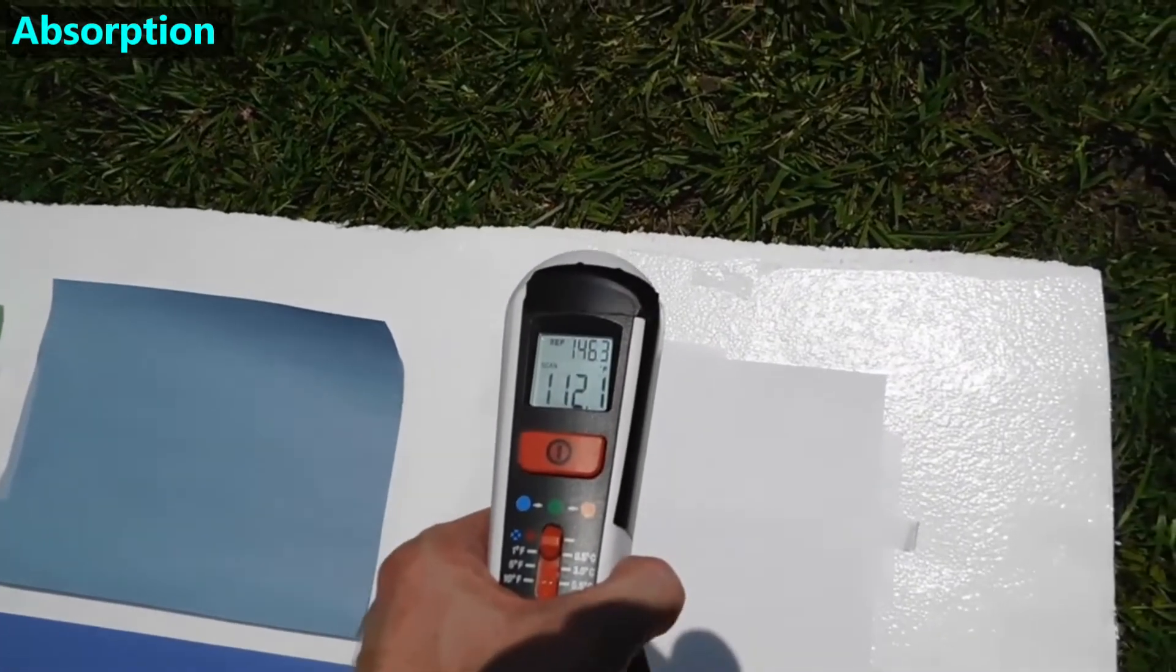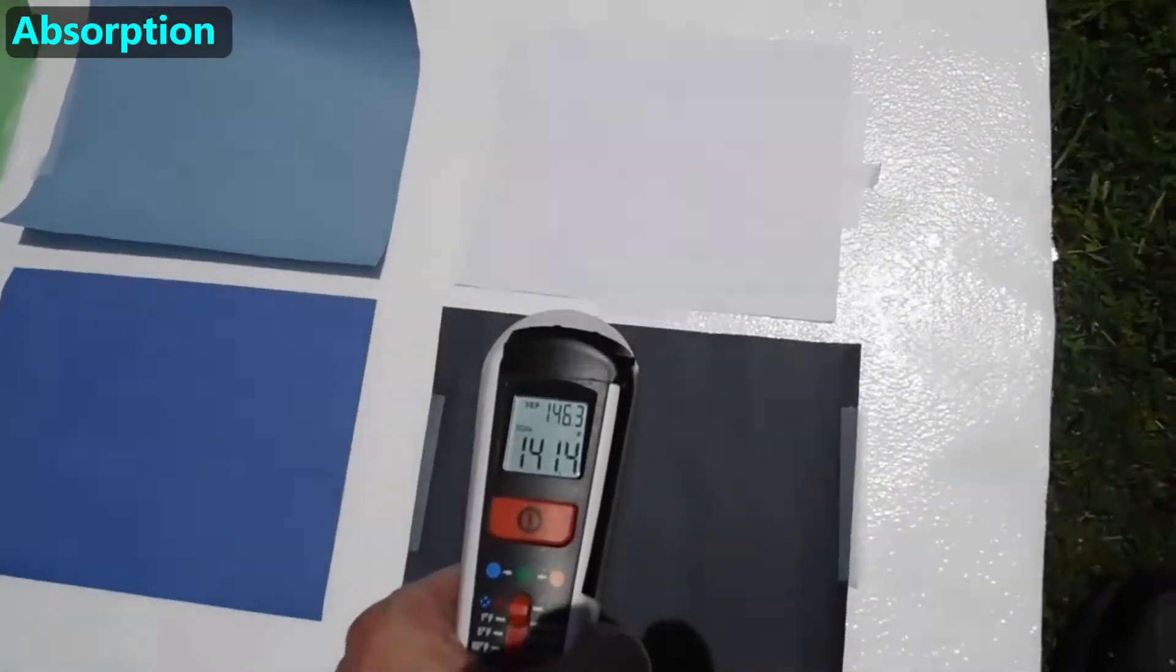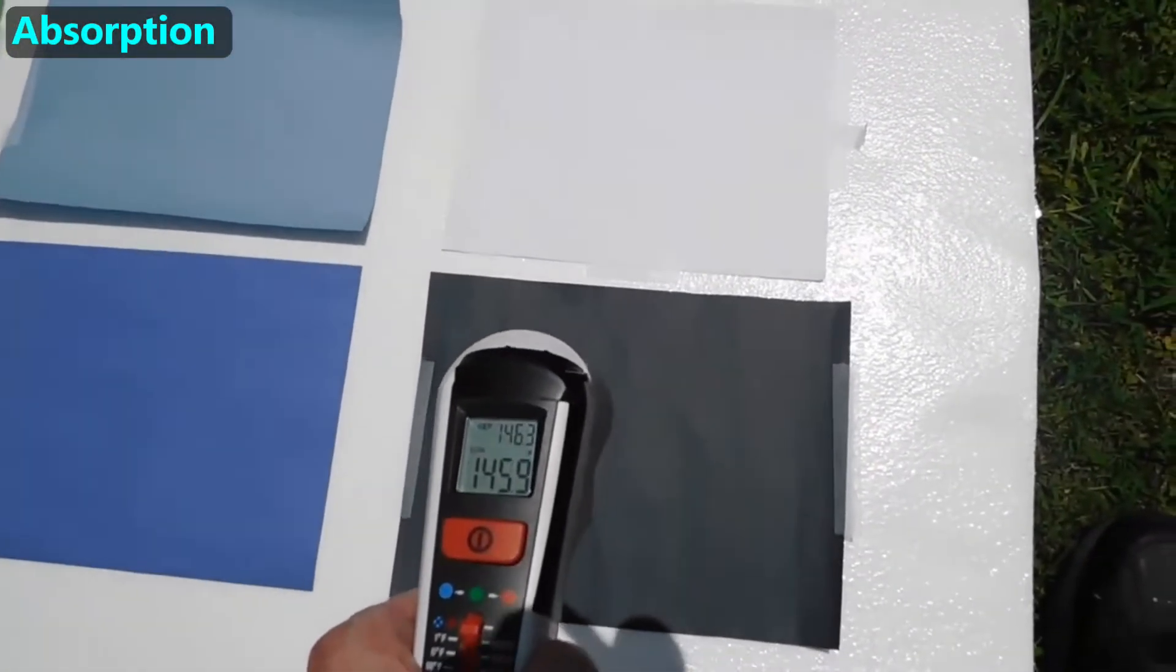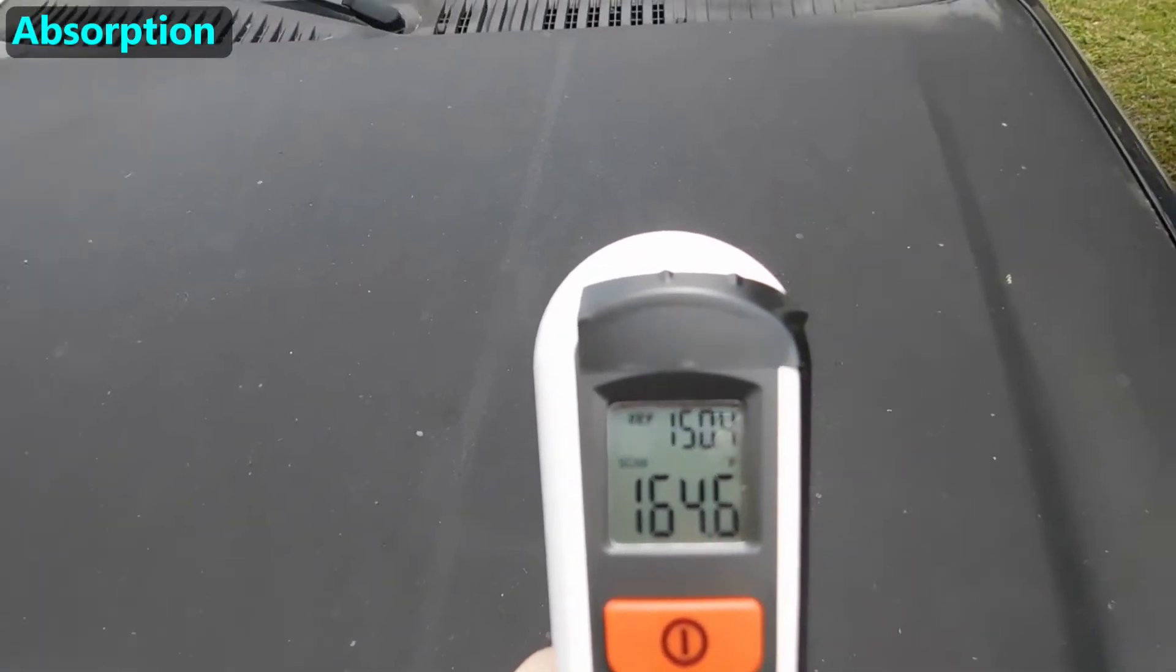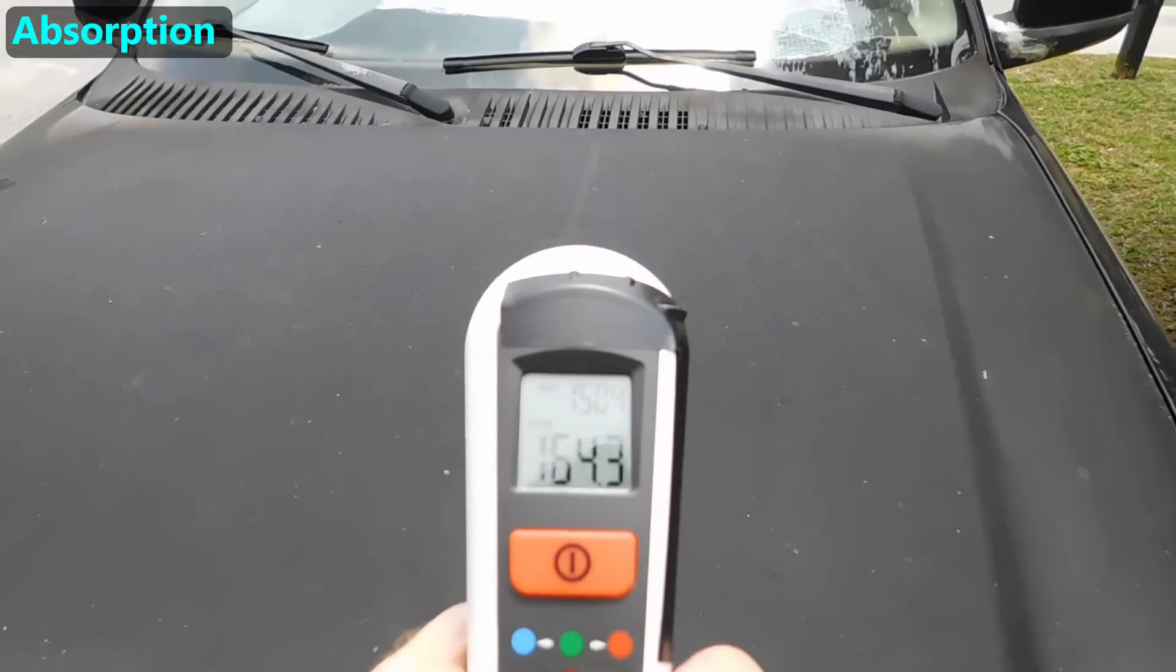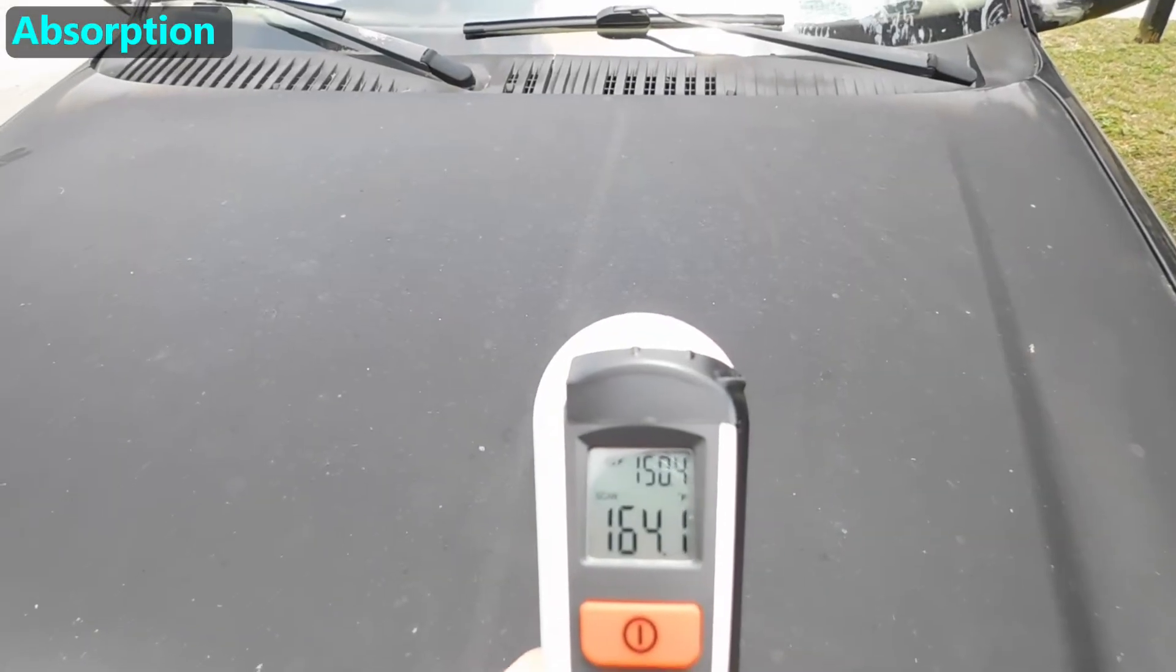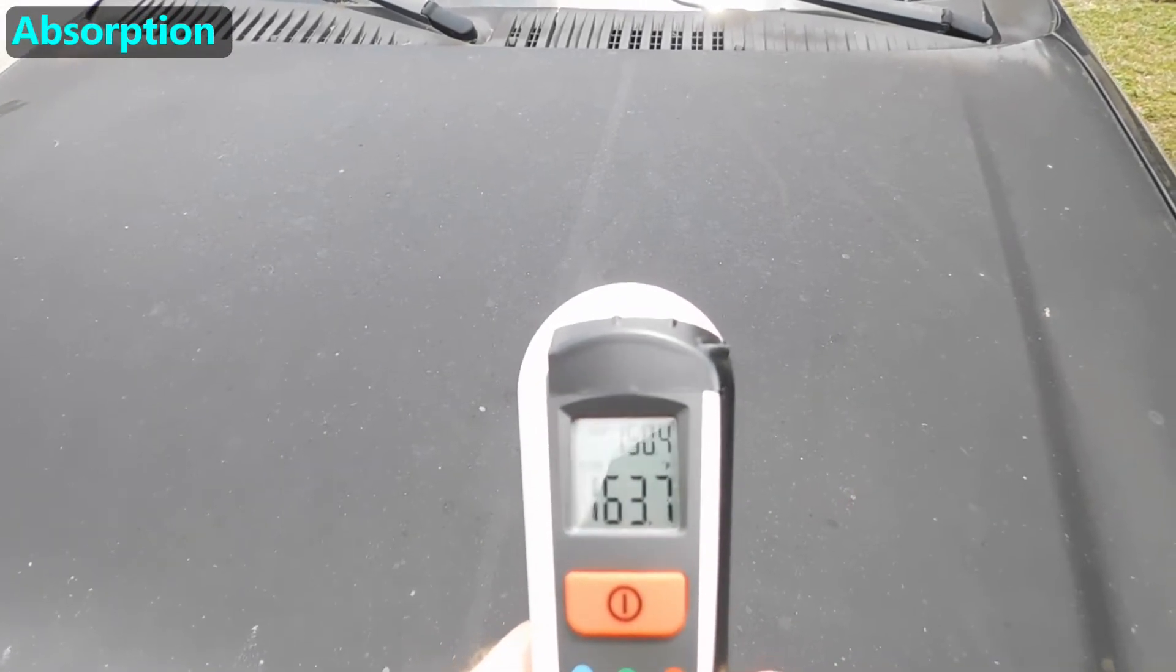Light waves can also be absorbed. Black dye or paint absorbs more light waves than white paper. When the energy in that light wave is absorbed by a dye or paint, the light wave stops existing, but its energy is instead converted into another form, which is usually heat.